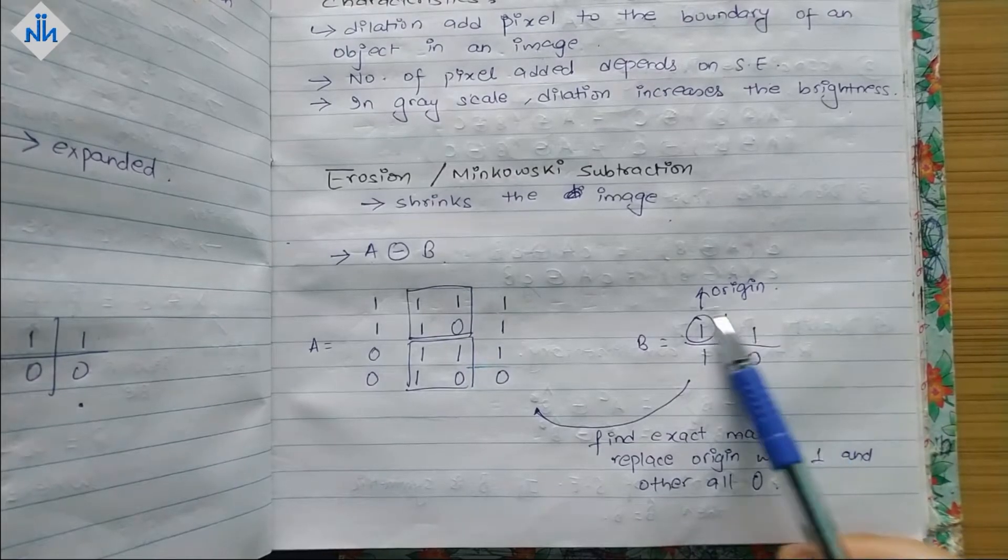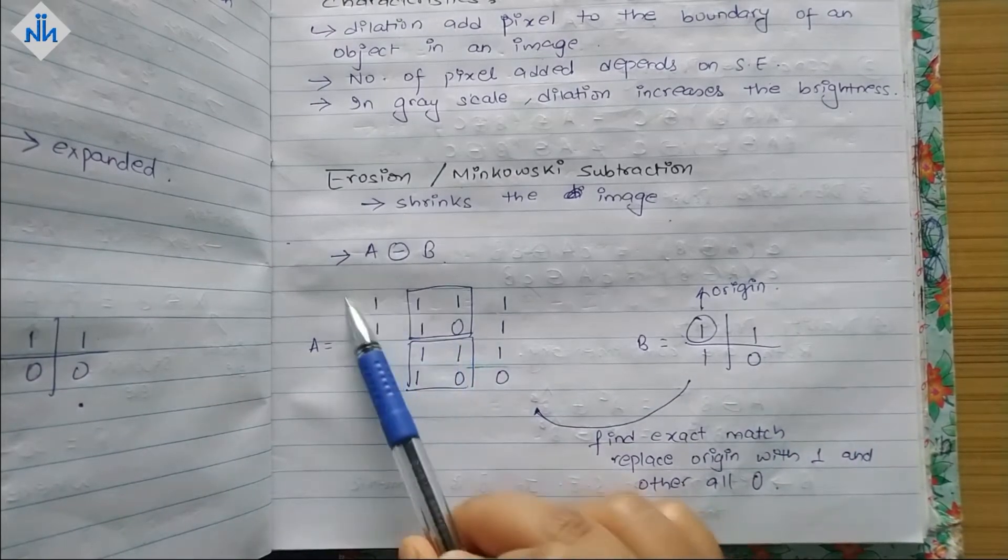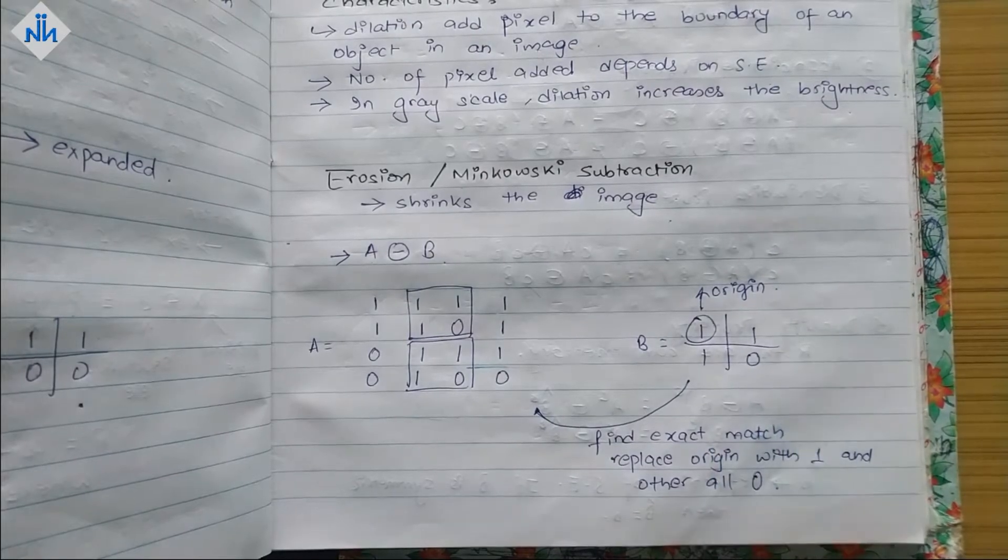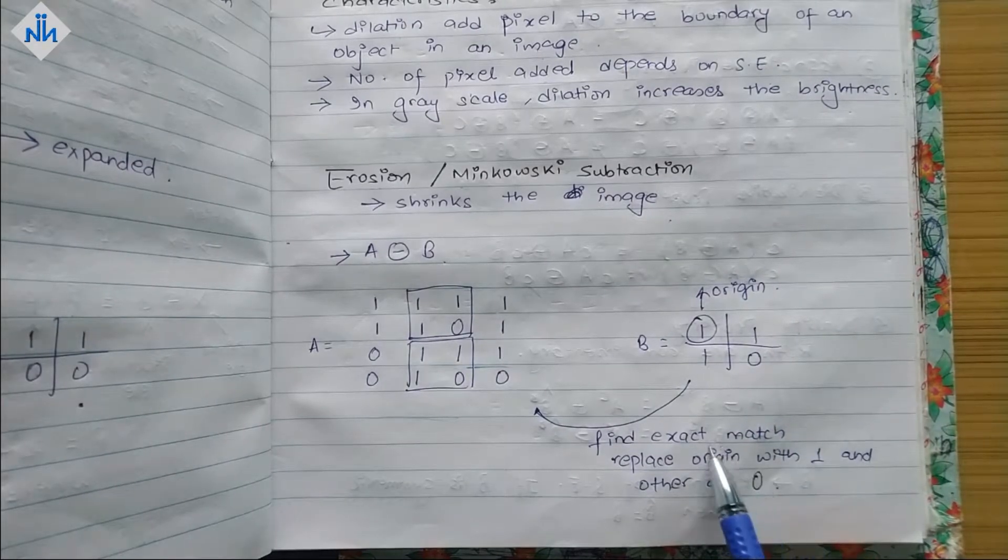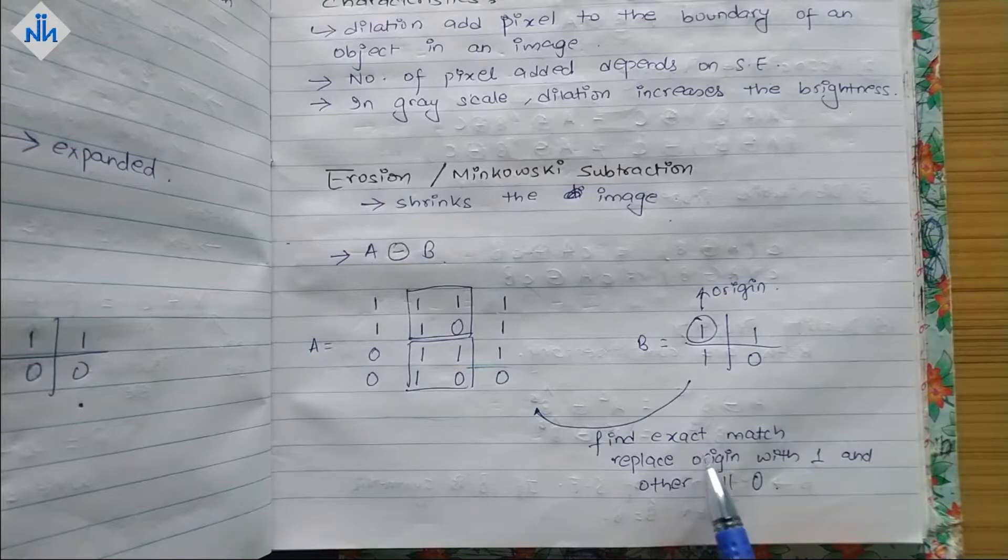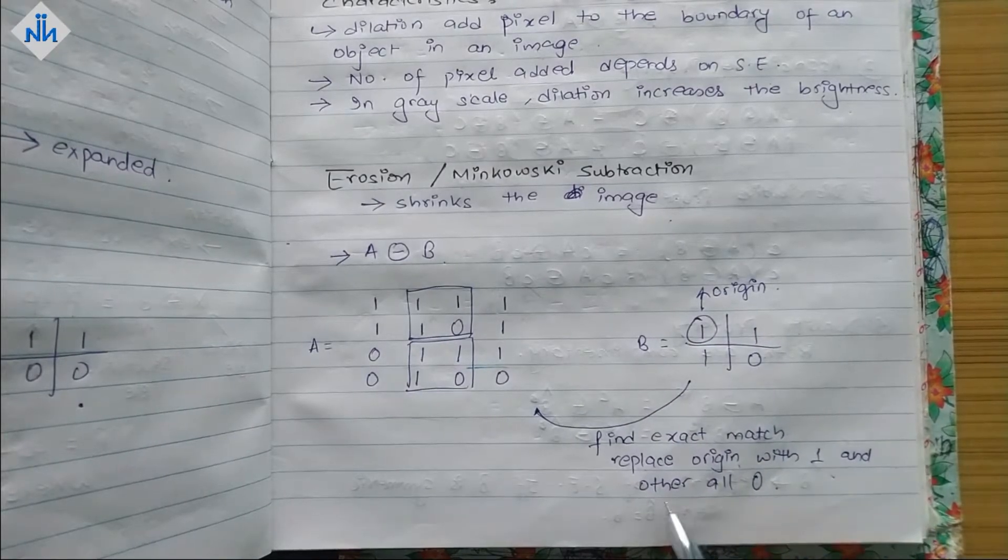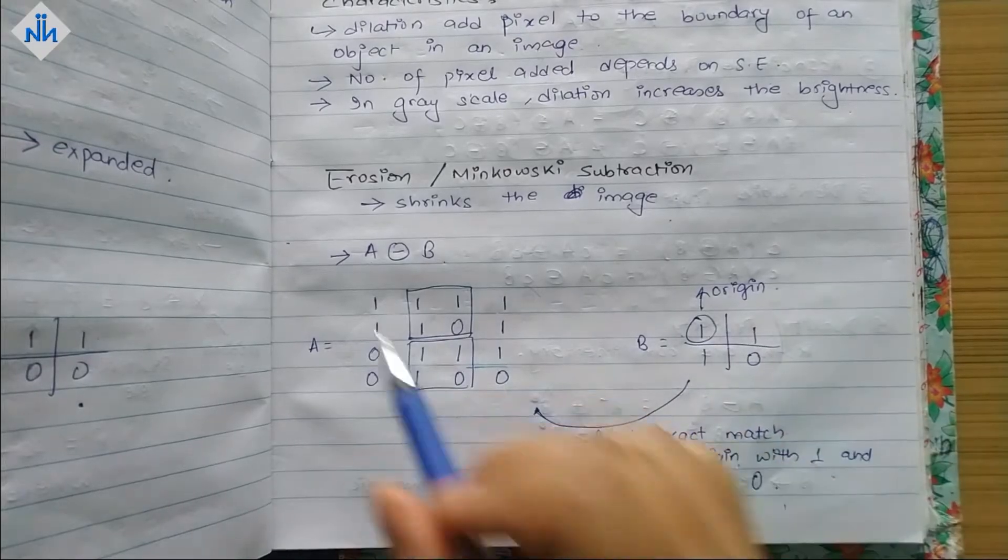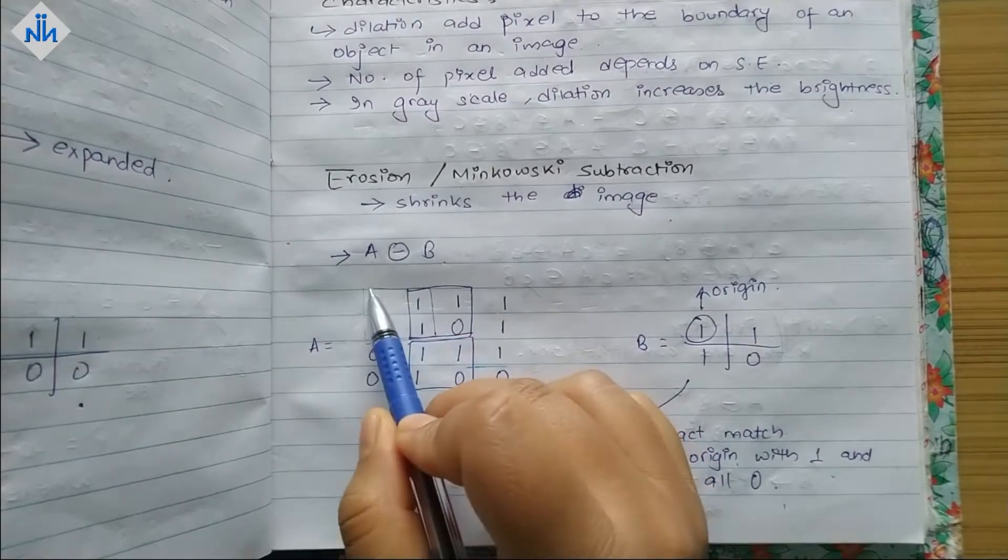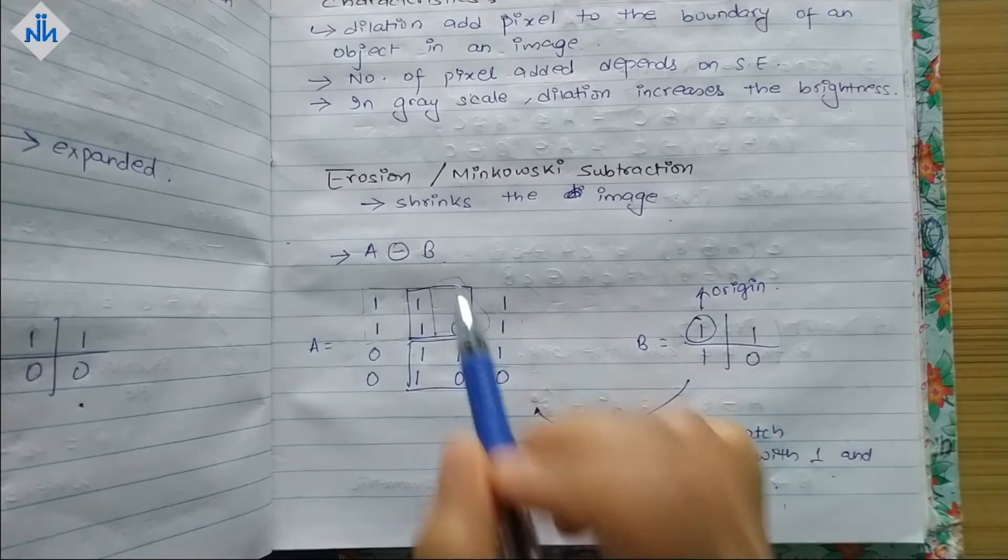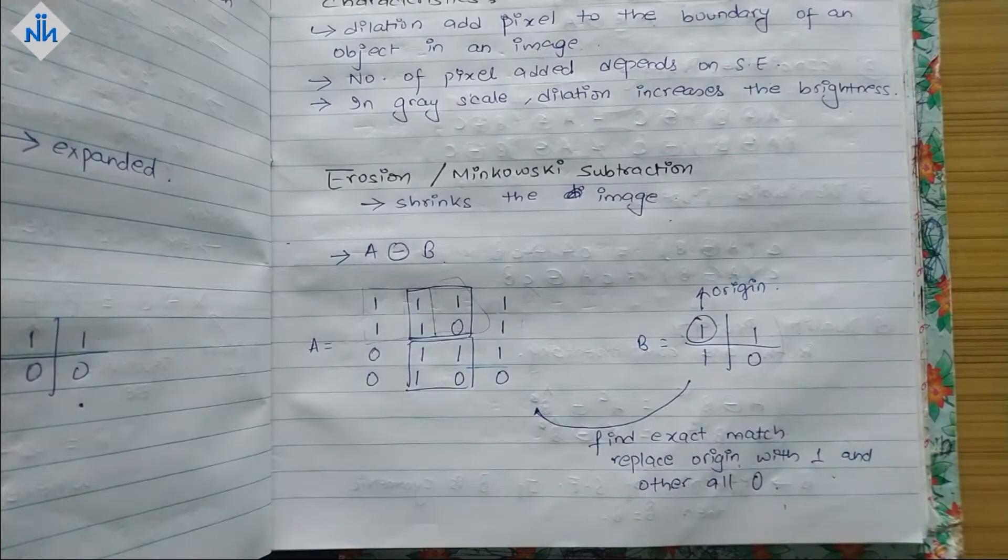Then what we do is we keep this on our image and we find the exact match, that means each and every pixel should be matching. If we find the exact match then what we do is replace the origin with one and other all with zero. So this will be first added over here, then here, then here, and for everyone we will basically find out the exact match.